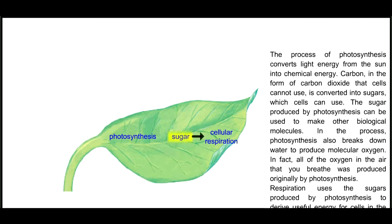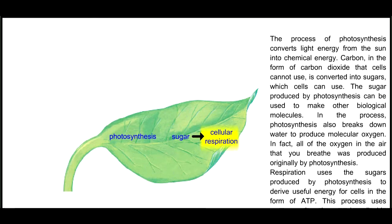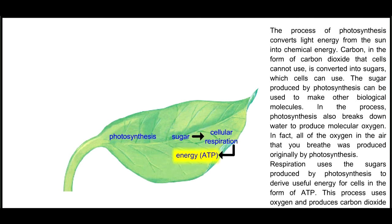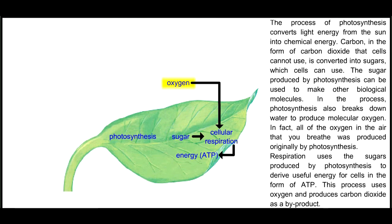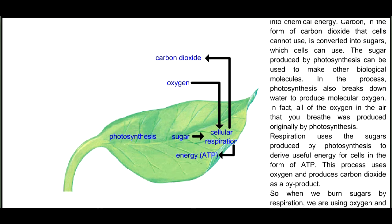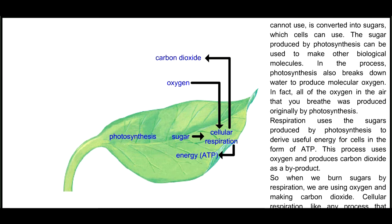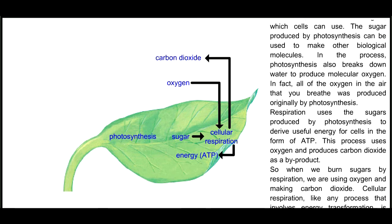Respiration uses the sugars produced by photosynthesis to derive useful energy for cells in the form of ATP. This process uses oxygen and produces carbon dioxide as a byproduct. So when we burn sugars by respiration, we're using oxygen and making carbon dioxide.